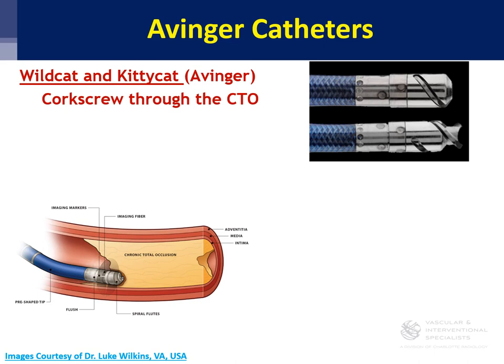There are additional catheters that hopefully keep you true lumen. A couple are the Wildcat or Kitty Cat, which is a corkscrew through the CTO — an Archimedes screw that bores through the CTO while hopefully staying true lumen. As Luke Wilkins says, the most difficult part about the Kitty Cat is that at some point in the procedure you have to ask for a kitty cat, which is somewhat humiliating.